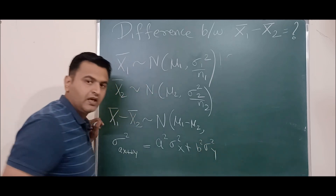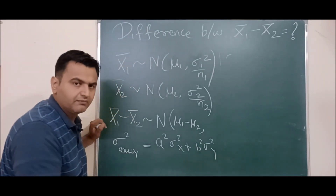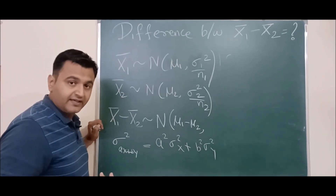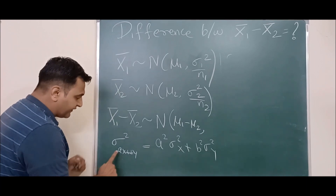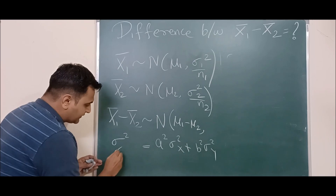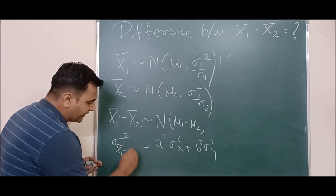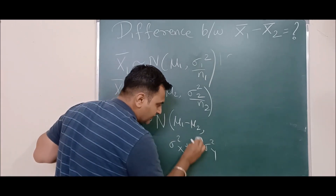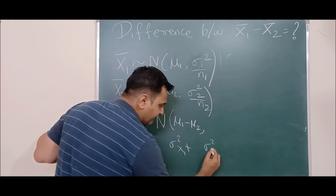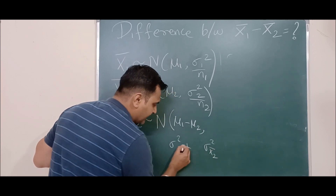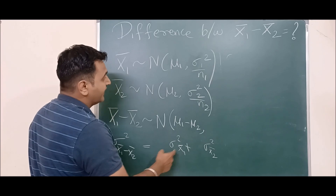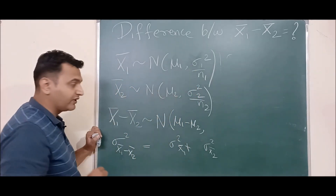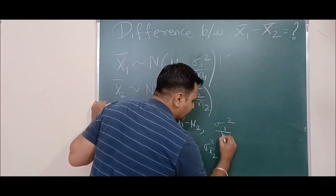For the variance, we use the property that for independent random variables x and y, Var(ax + by) = a²Var(x) + b²Var(y), since the covariance is zero when x and y are independent. Here x̄₁ and x̄₂ are independent, so their covariance is 0. Therefore, Var(x̄₁ - x̄₂) = Var(x̄₁) + Var(x̄₂) = σ₁²/n₁ + σ₂²/n₂.